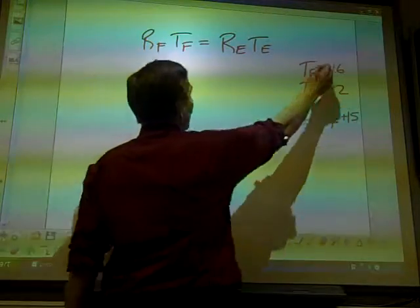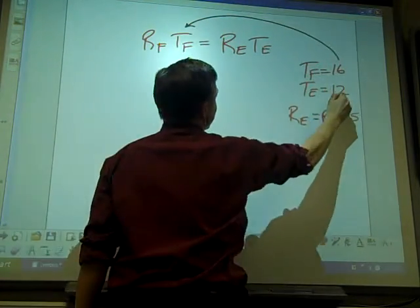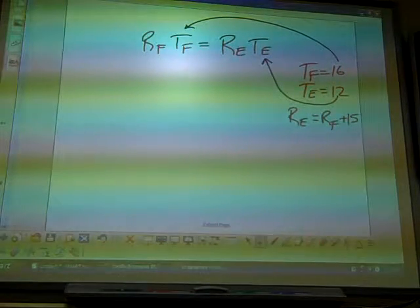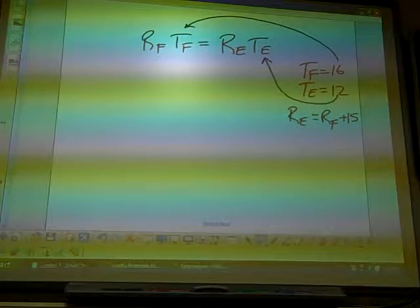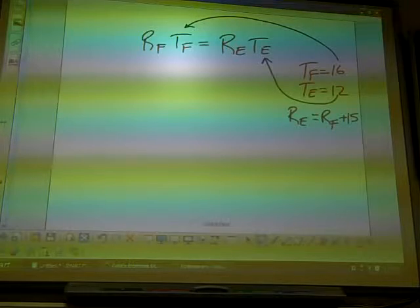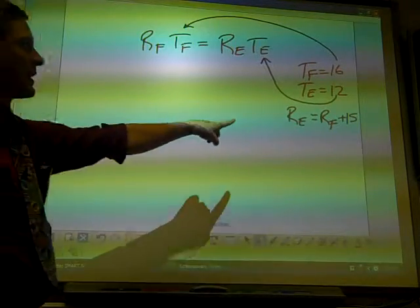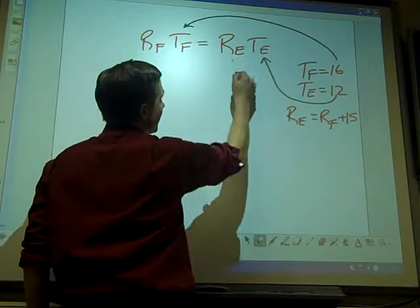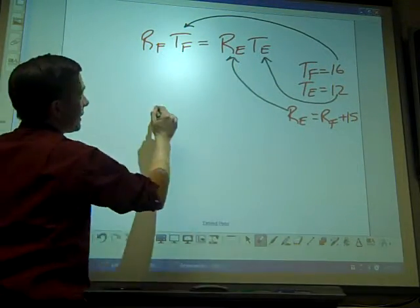And again, plugging in the numbers is the easiest. Now this time you don't get to choose, in my opinion. It says R_E equals R_F plus 15. I do not want to reorganize this. So instead of replacing R_F, I will replace R_E.